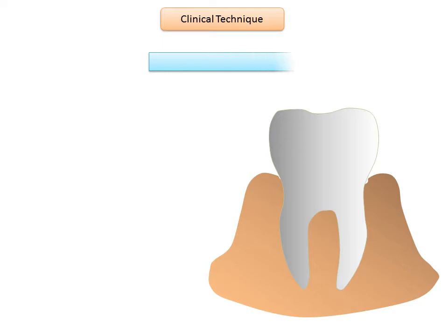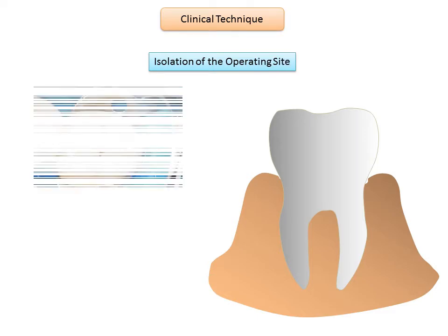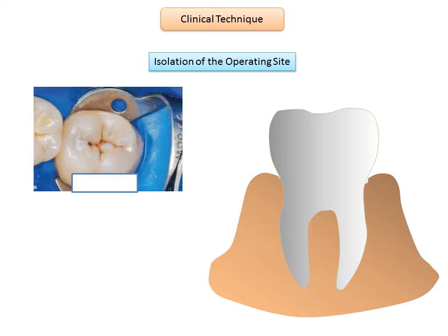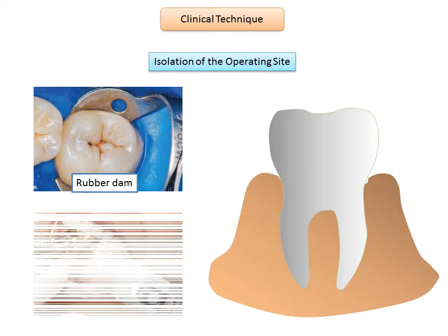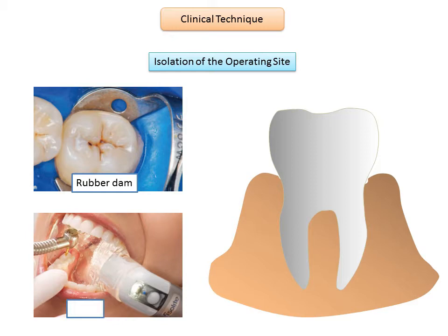The next step is isolation of the operating site. Isolation for tooth-colored restorations is critical and can be accomplished with a rubber dam or an isolation device like Isolite. Cotton rolls should be placed in the sulcus regardless of the method. Isolation is imperative if a successful bond is to be obtained, because contamination of the etched enamel or dentine by saliva will result in decreased bond, and contamination of the composite during insertion will result in degradation of physical and mechanical properties.